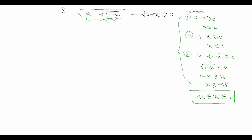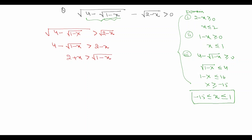Now I'll solve the question. On the right-hand side, I write 4 minus √(1 minus x) > √(2 minus x), which can be rewritten as 2 + x > √(1 minus x). Since there is an irrational expression on the right and a rational on the left, I need two separate cases: Case 1 when x + 2 < 0, and Case 2 when x + 2 ≥ 0.